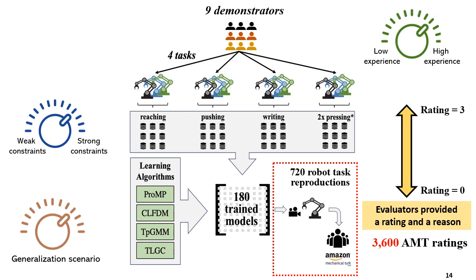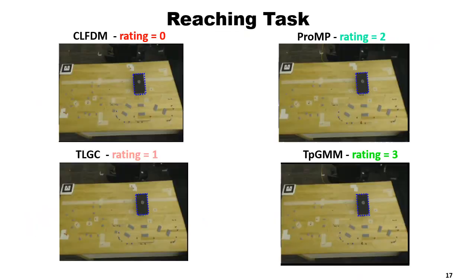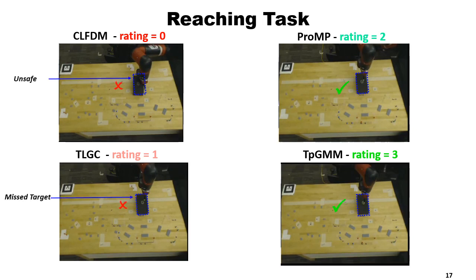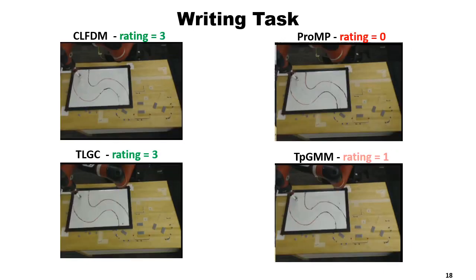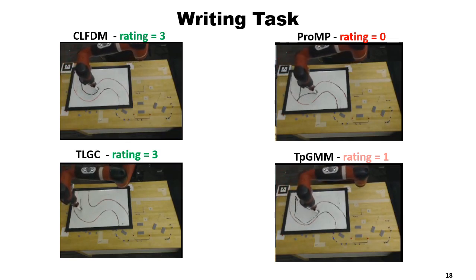We had a lot of results, so here's a glimpse. In this video you see the reaching task reproductions on the robot. On the left of your screen you see CLFDM and TLGC, which did not perform reliably well on this task compared to ProMP and TPGMM. It should be noted that CLFDM and TLGC are both time invariant approaches. CLFDM imposes convergence to the goal but does not add obstacle avoidance, so we often saw obstacle collision with the table. TLGC focuses on curvature of motions but does not enforce goal convergence. For the writing task, the tables flipped — CLFDM and TLGC performed really well, while ProMP and TPGMM did not draw the S shape as well.